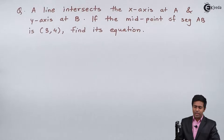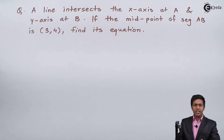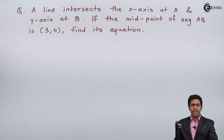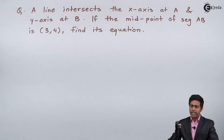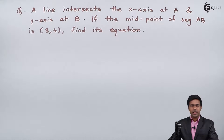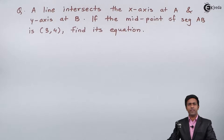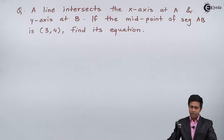Hello everyone. In this problem we have to find the equation of a line based on the given conditions. The line intersects the x-axis at point A and the y-axis at point B. Two points are given. If the midpoint of segment AB is (3, 4), then we have to find out the equation of the line.